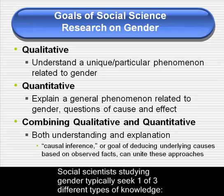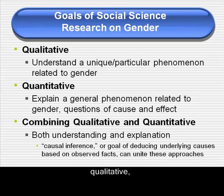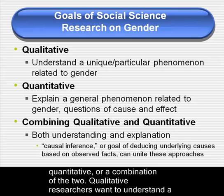Social scientists studying gender typically seek one of three different types of knowledge: qualitative, quantitative, or a combination of the two.